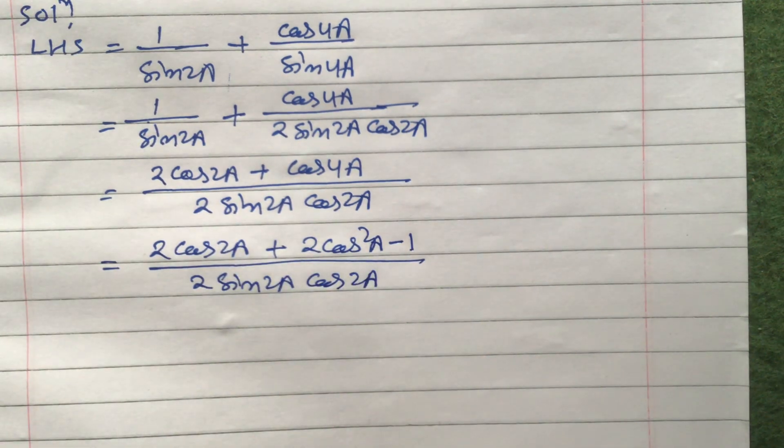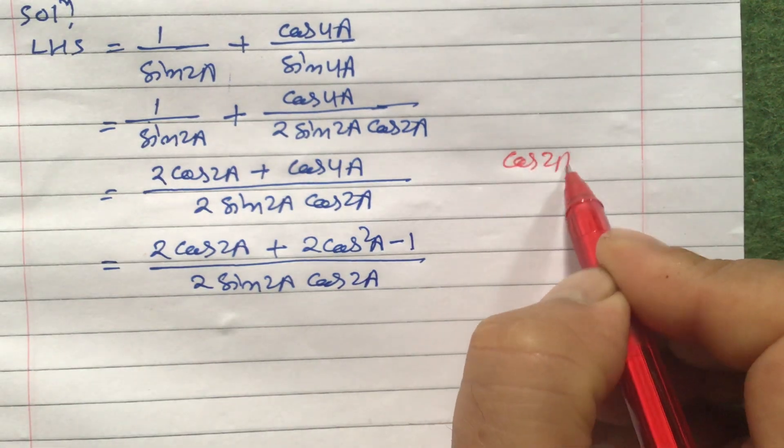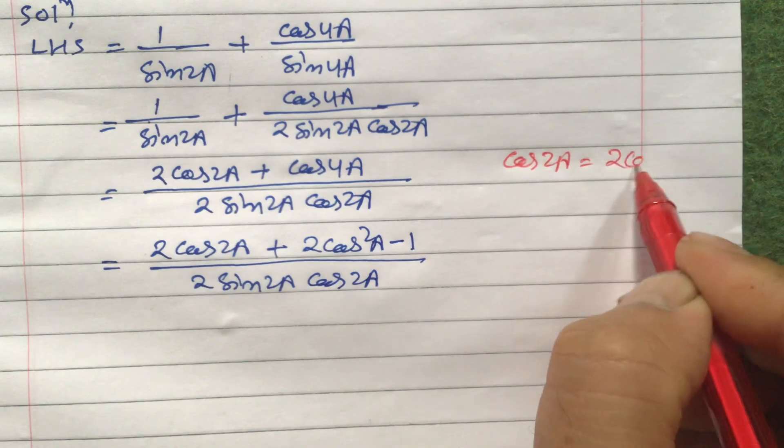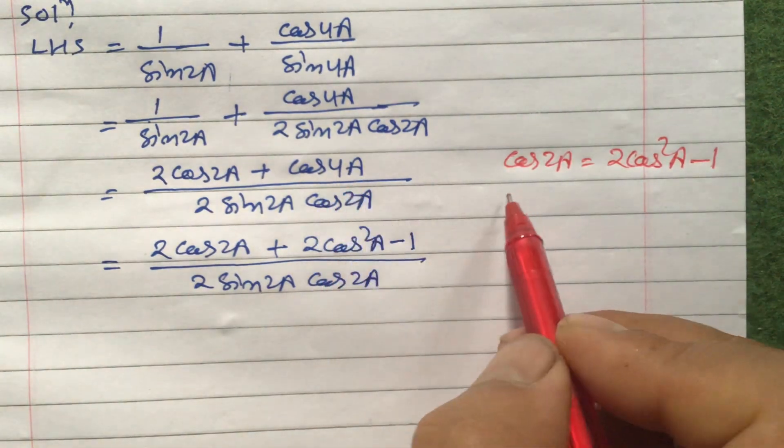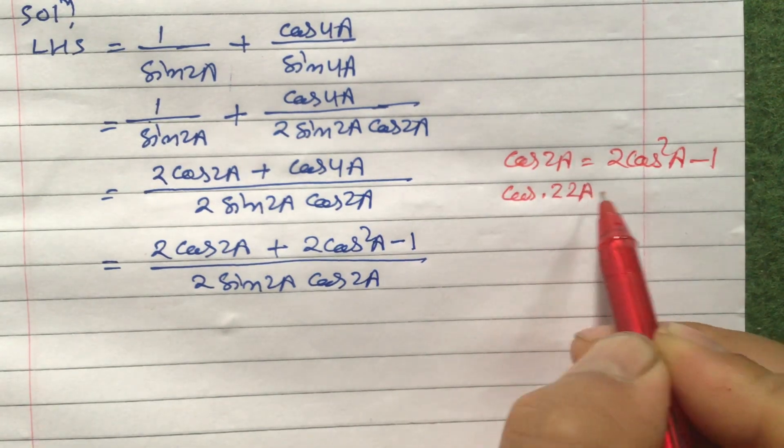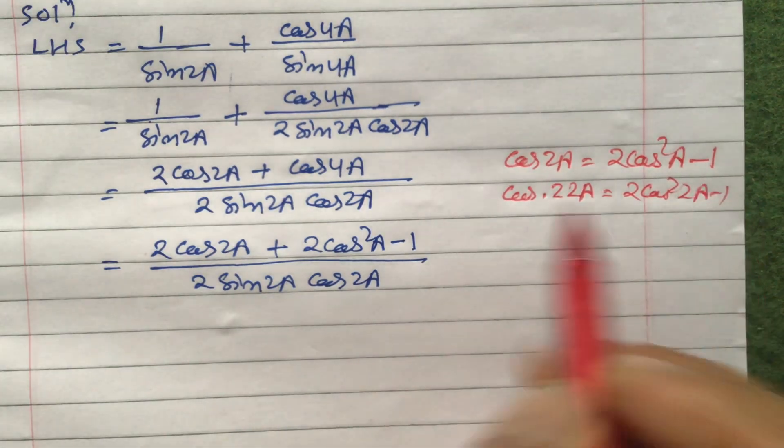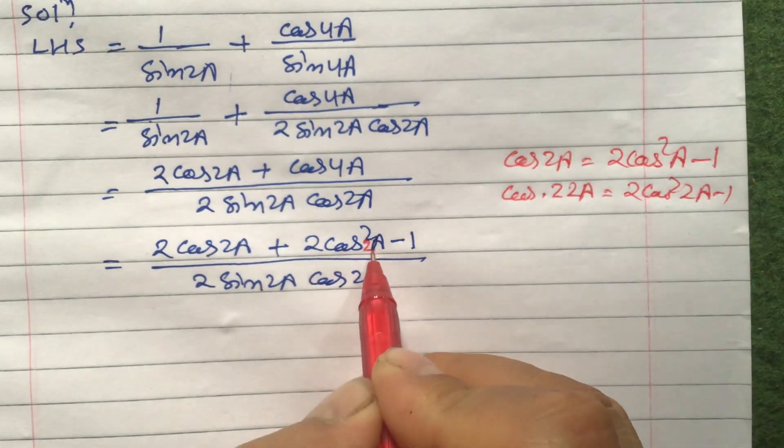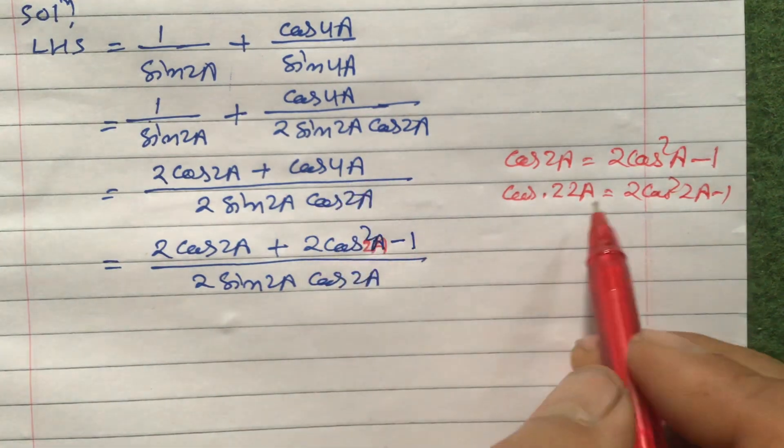Why we are choosing this one? Because the formula is like this: cos 2a formula is 2 cos square a minus 1, and here we have got cos 4a is cos 2 times 2a. So 2 cos square 2a minus 1, because there is 4a like this.